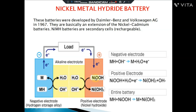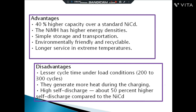During discharging, the forward reaction takes place. During charging, the reversible reaction takes place and we get back the reactants so the reaction can happen again to provide energy. By looking at the diagram, you should be able to write the reactions and the overall reaction.